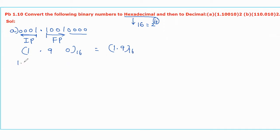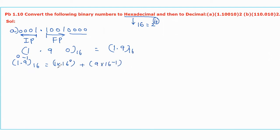The next step is to convert this hexadecimal into decimal by assigning weights to each digit of the integer part and fractional part. The weight for the integer part is 0, and the weight for the fractional part is minus 1. Now we multiply: 1 with 16 power 0, plus 9 into 16 power minus 1. That becomes 1 plus 9 by 16, which is equal to 1.5625 with base 10. This is the required decimal value for the given binary.